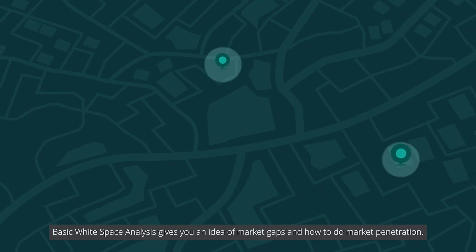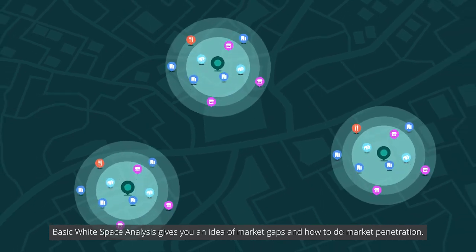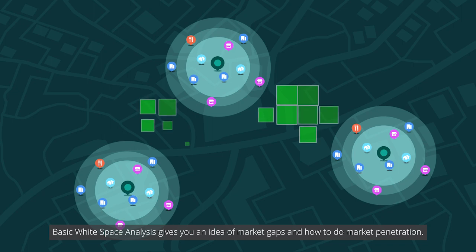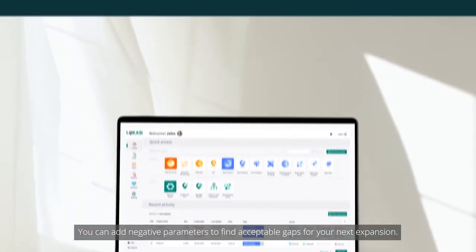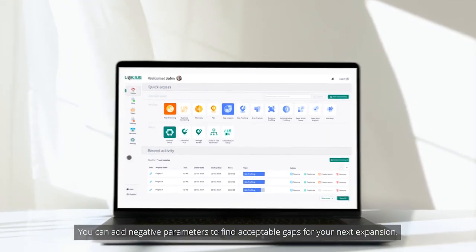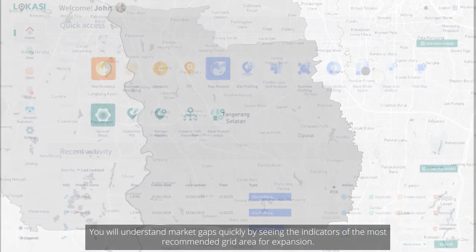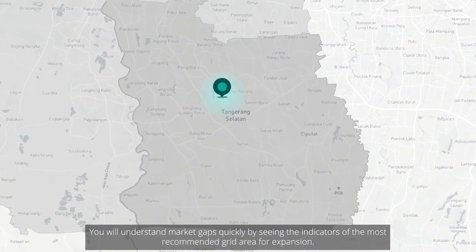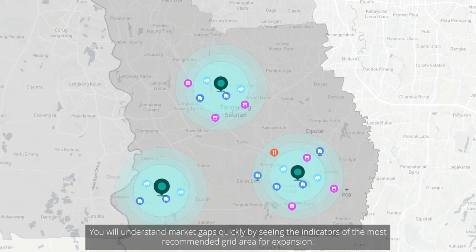Basic white space analysis gives you an idea of market gaps and how to do market penetration. You can add negative parameters to find acceptable gaps for your next expansion. You will understand market gaps quickly by seeing the indicators of the most recommended grid area for expansion.